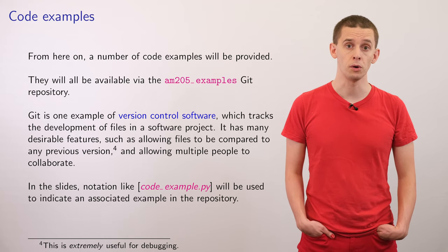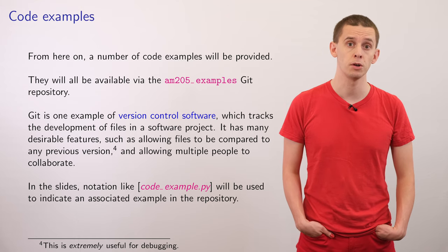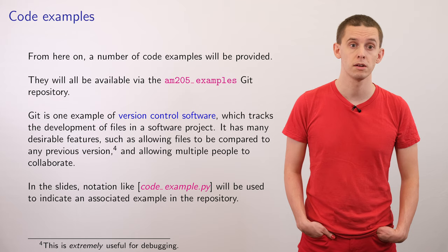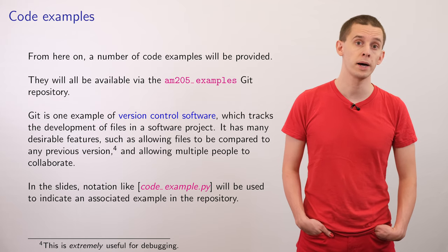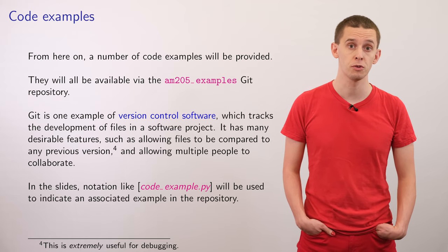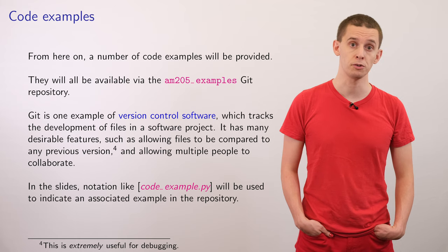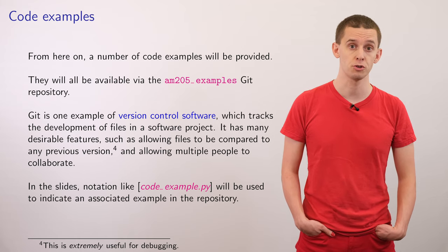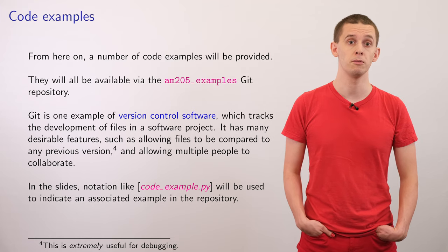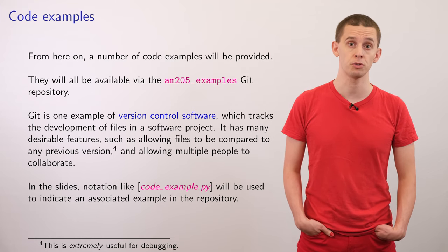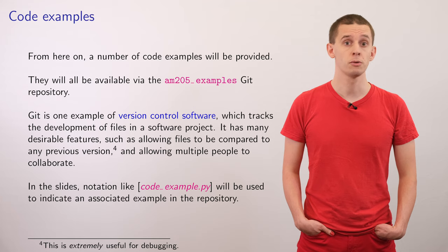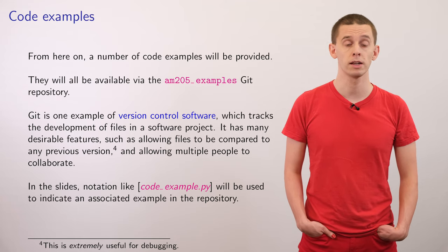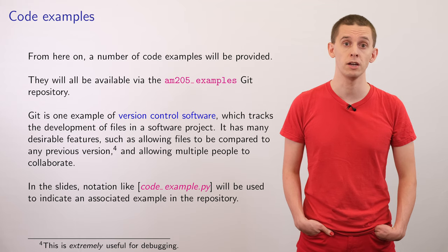The basic way that Git works is that it can take snapshots of your project as it develops. It provides you an interface that allows you to roll back any files to any previous version or compare files to any previous version. It also allows you to sync those snapshots with other people via repositories stored on central servers. Git is an extremely useful tool and it's great for debugging because it can allow you to look at exactly what you changed in your project.